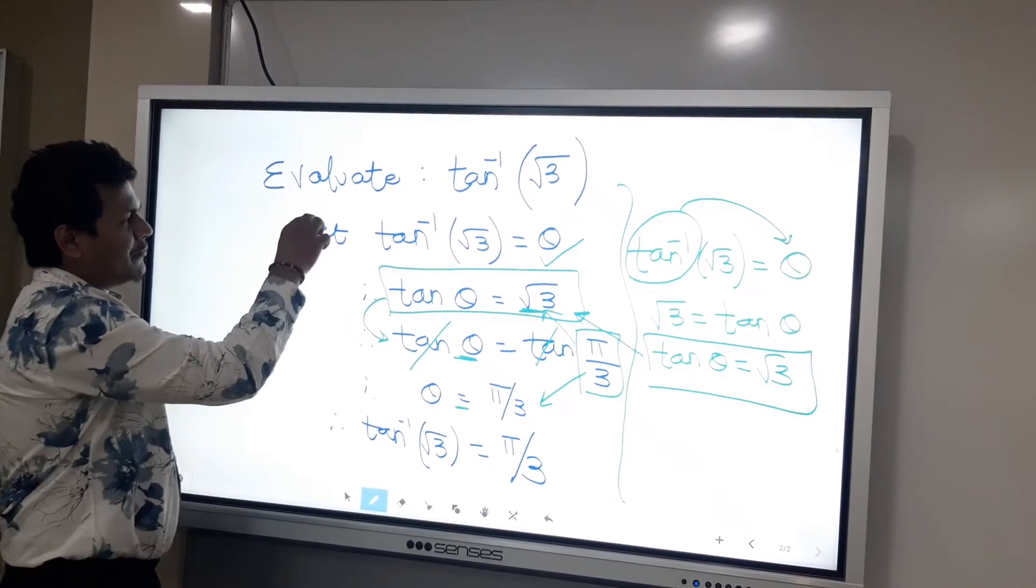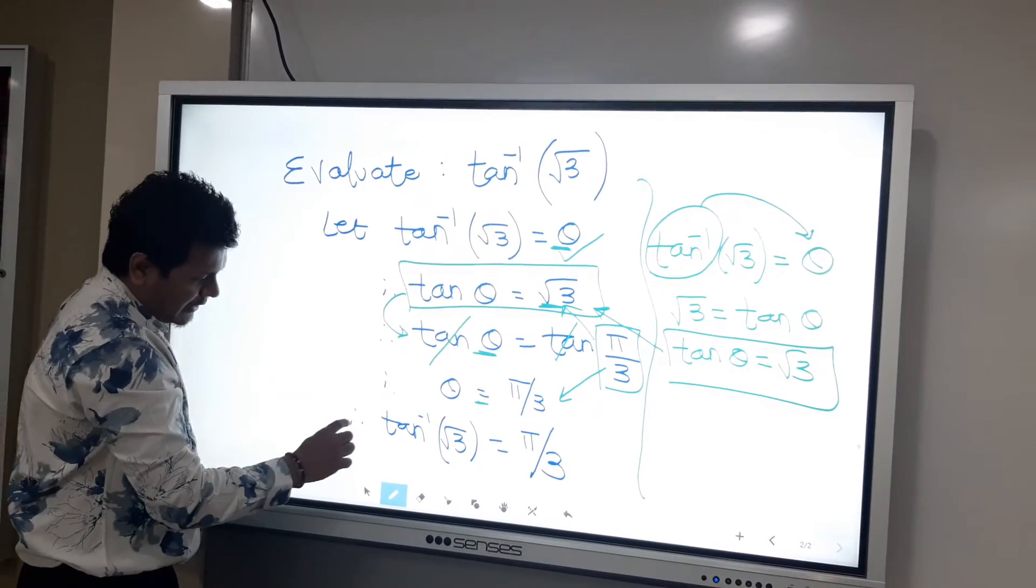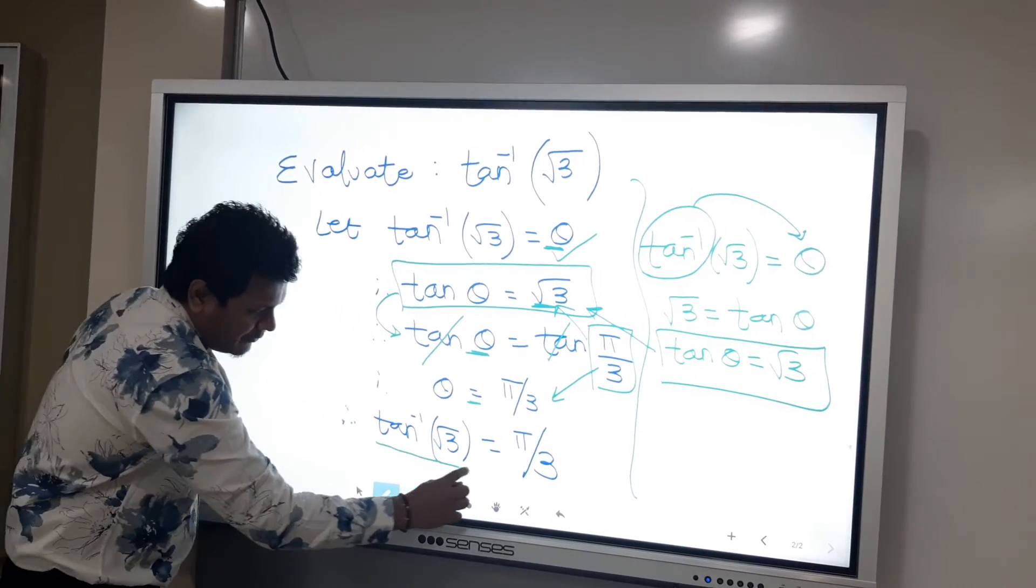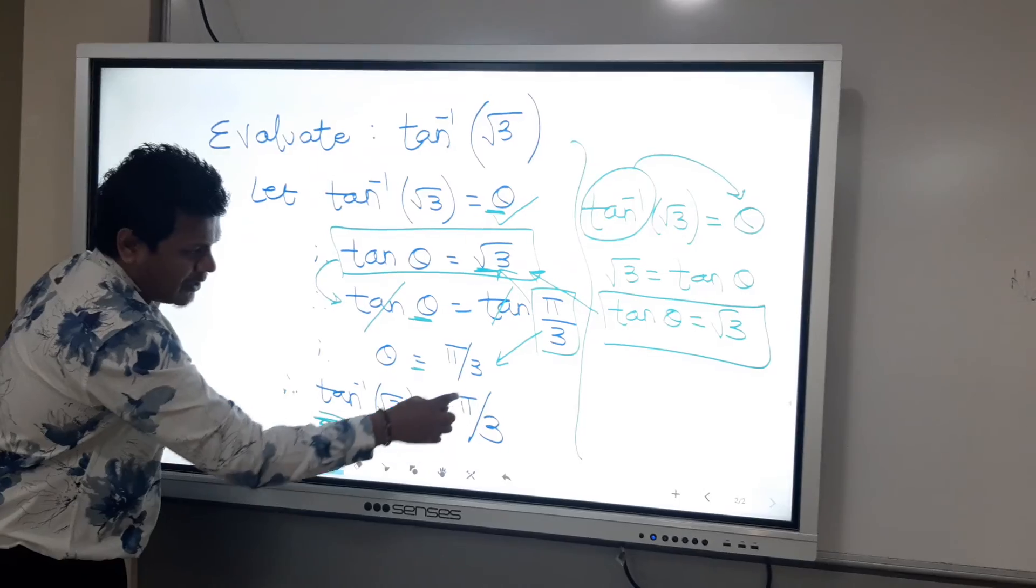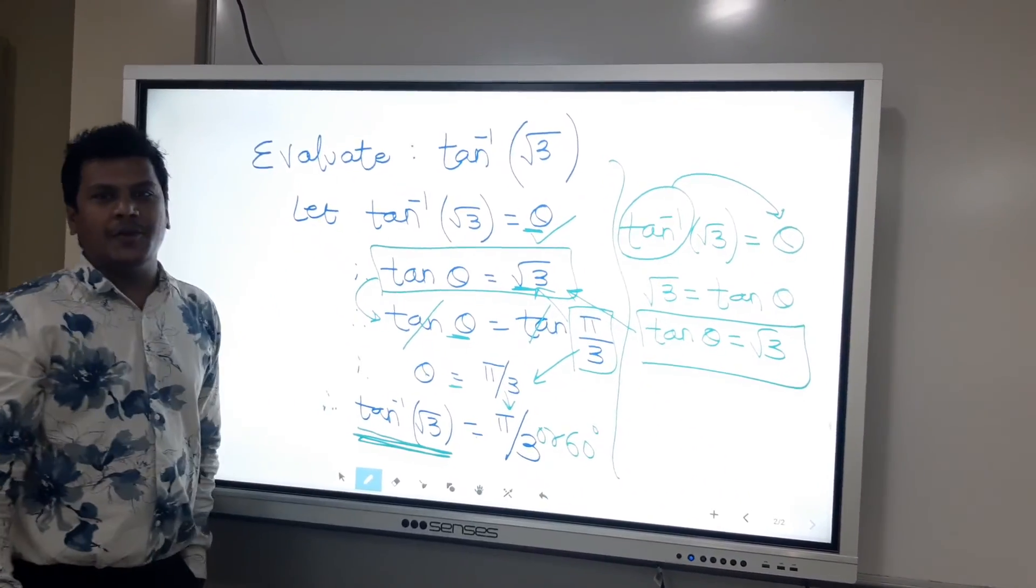As per the first step, the value of theta is the question. Therefore, tan inverse root 3 equals pi upon 3, or we can say 60 degrees. Thank you.